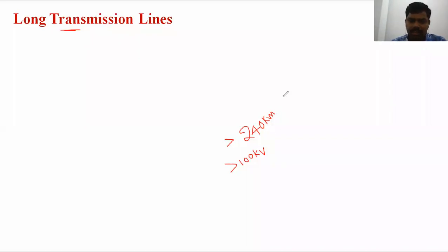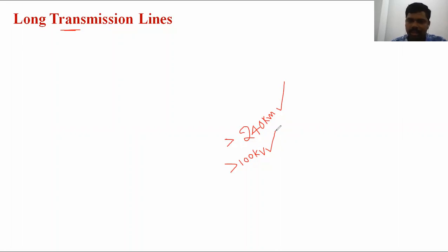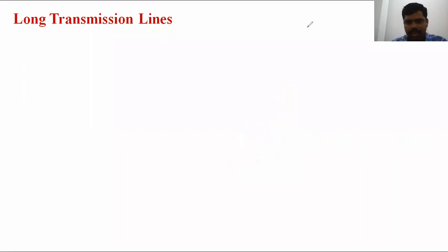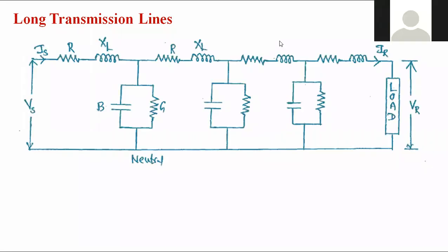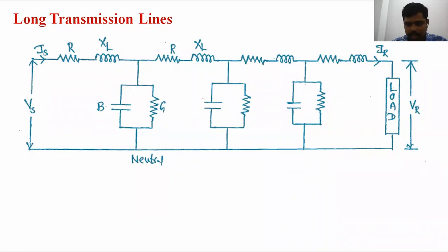In the long transmission line, the line length is greater than 240 kilometers — either 300, 500, or 700 kilometers — and the operating voltage is greater than 100 kV. Practically, it is considered for 132 kV, 220, 400, and 765 kV. In India, the maximum operating voltage for AC transmission lines is 765 kV. The long transmission line has four parameters: resistance, inductance, capacitance, and conductance.